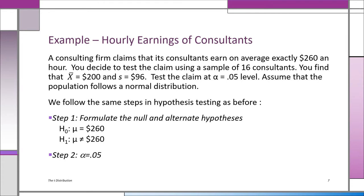Let's follow the steps in hypothesis testing. We usually boil hypothesis testing down to four parts: the null and alternate hypothesis, the critical values for the decision rule, the calculated value of the test statistic, and the decision. Step one: formulate the null and alternate hypotheses. The null hypothesis is the claim — mu equals $260 an hour. If we reject that, we accept the alternate hypothesis that it's not. Step two: the level of significance alpha is 0.05.